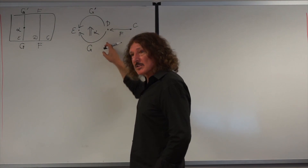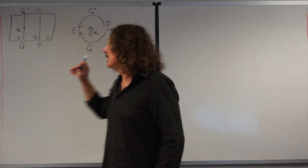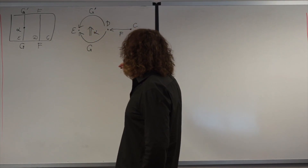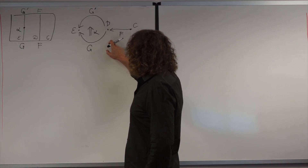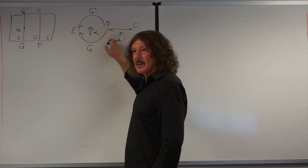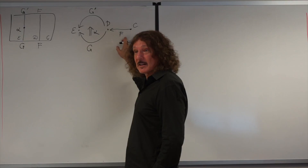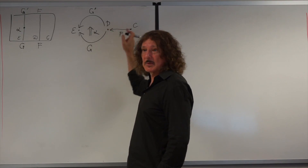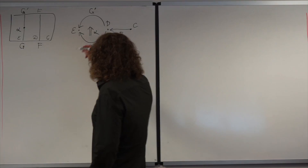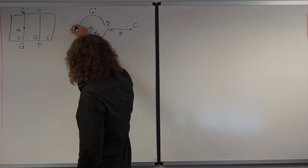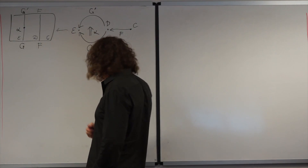From this picture we can think about what it means. This is why this is called whiskering — when you are combining a natural transformation with a functor, because this sort of looks like a whisker. You can even have more things, like another whisker on the other side.